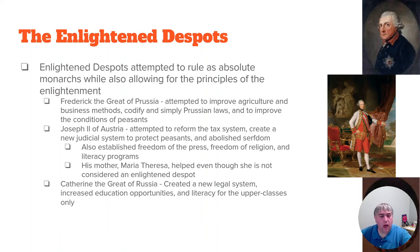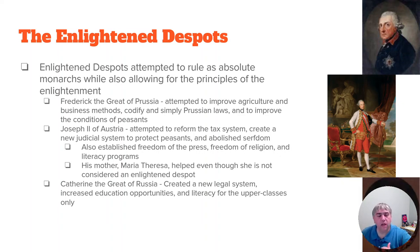In Austria, the Enlightened Despot was Joseph, who ruled originally with his mother Maria Theresa. Maria Theresa was not really an Enlightened Despot — it's all Joseph. Together, they tried to reform and simplify the tax system in Austria and make it more fair. They worked to create a fair judicial system that protected peasants, and they eventually abolished serfdom and peasanthood entirely. Joseph also established freedom of the press, freedom of religion, and literacy programs, though after his death, much of this went away.